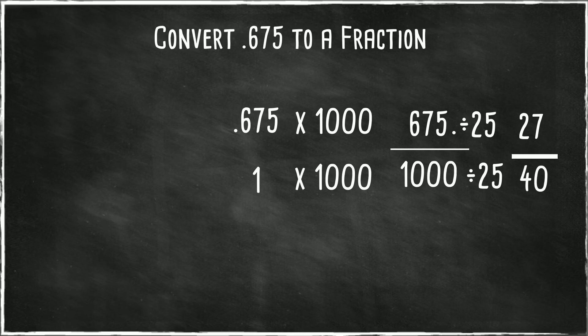27 is prime, so there's the fraction. 675 thousandths as a fraction is 27 fortieths.